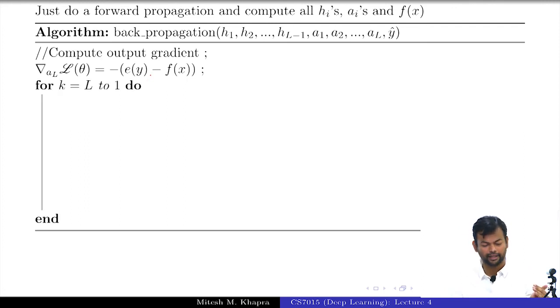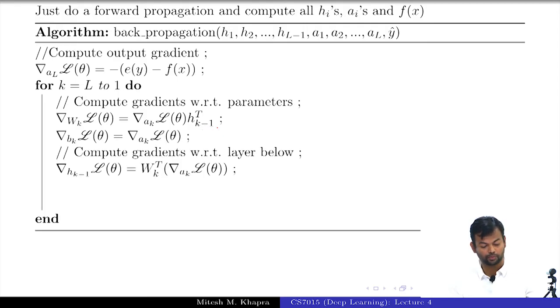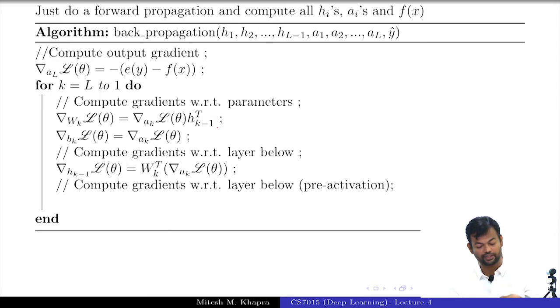Then what would the loop be, L to 1 or L minus 1? Let's see. First you compute the gradients with respect to parameters. It is L, correct. So, because we are using k minus 1, then you compute the gradients with respect to the layer below, compute gradients with respect to the pre-activation. This is exactly how you will proceed.